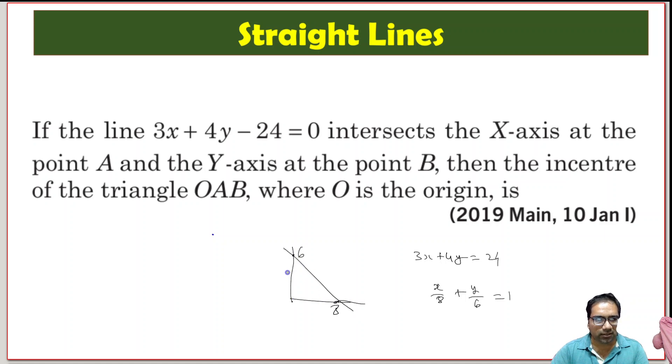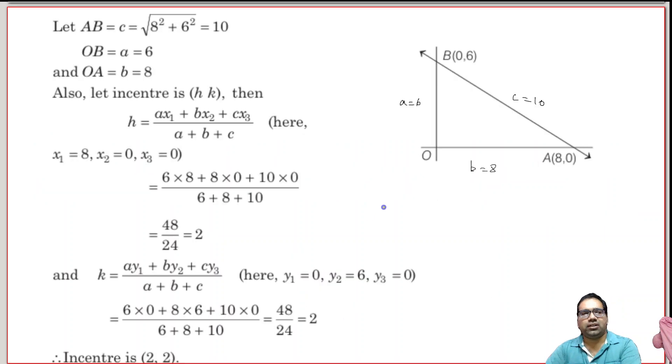This side length is 6, this side length is 8, and this side length is 10. This length is 8 because it is 8 minus 0, and this length is 6. Because this is the hypotenuse, 8 squared plus 6 squared equals 100, so this one should be equal to 10.